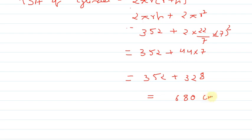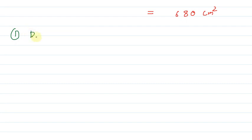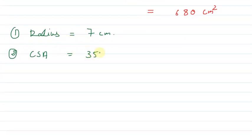Let's summarize the answers. First, we found the radius from the given volume: radius was 7 centimeters. Next, the curved surface area came out to be 352 centimeter square. And finally, the total surface area came out to be 680 centimeter square. I hope you will have understood the solution. Thank you for watching.